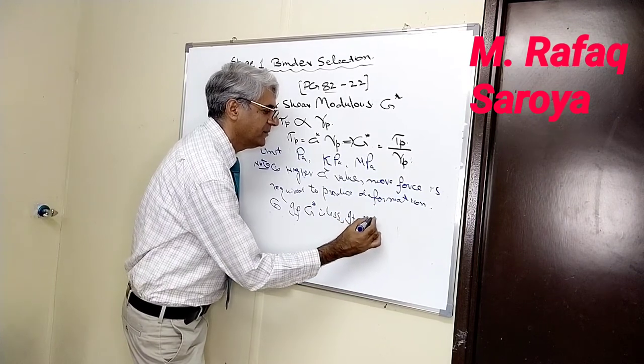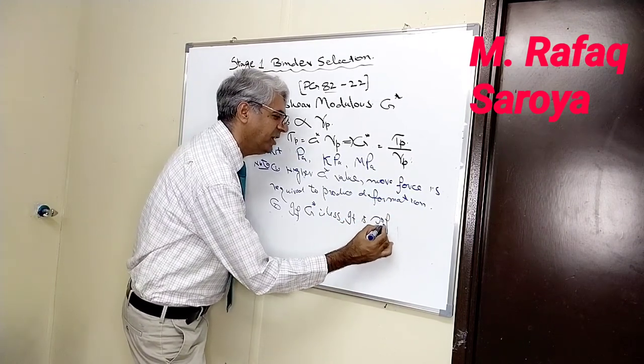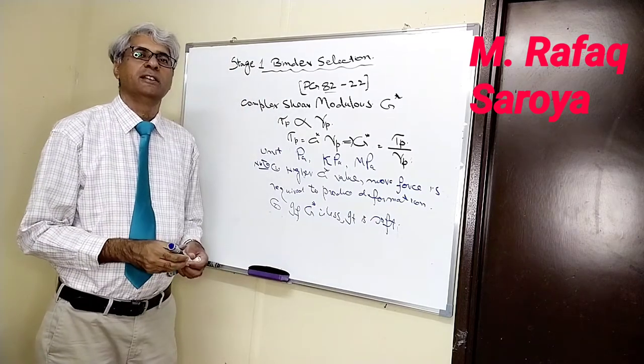More force is required to produce deformation. If less material can be deformed easily, it is soft. Simple, you can say, you know, when the material is soft, it can be deformed easily. Clear it.